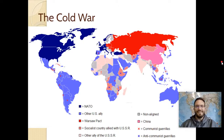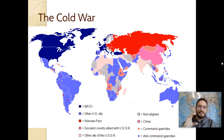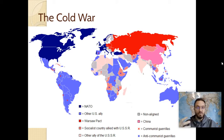What's up, Human Geography? Time for us to talk about the Cold War. We're in Unit 4, Political Geography, and it's really important for you to understand the two big Cs. We've already covered colonialism and imperialism, which is one of them, and the other one is the Cold War.